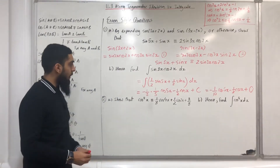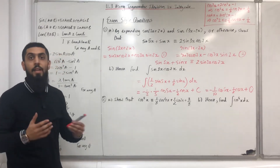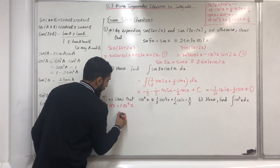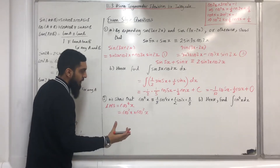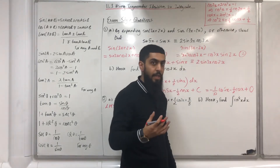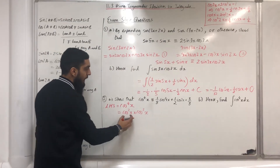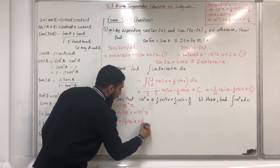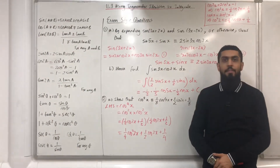Moving on to question 2 part a: show that cos to the power 4 of x is identical to 1 over 8 cos 4x plus 1 over 2 cos 2x plus 3 over 8. I'm going to start from the left-hand side. Cos to the power 4 of x is the same as cos squared x multiplied by cos squared x. I'll use the double angle formula cos 2x equals 2 cos squared x minus 1 to make cos squared x the subject, giving cos squared x equals one half cos 2x plus one half. Replacing cos squared x gives the bracket one half cos 2x plus one half, multiplied by one half cos 2x plus one half.